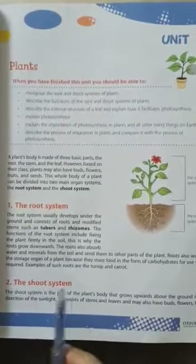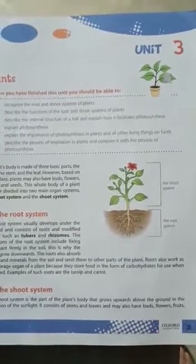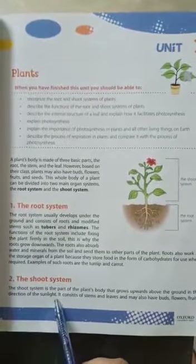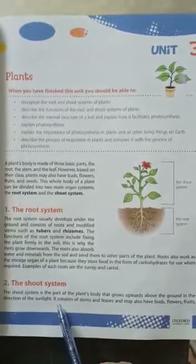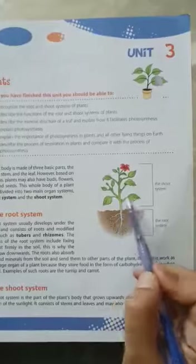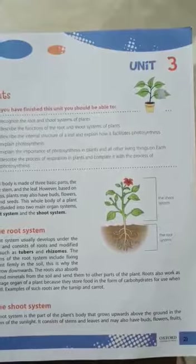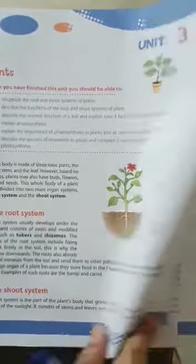The shoot system is the part of the plant's body that grows upwards, above ground, in the direction of sunlight — jahaan sunlight hogi wahan plant apna face karta hai. It consists of stems, leaves, and may also have buds, flowers, and seeds. Jo bhi cheezein plant ki above the ground hain, they are in the shoot system.